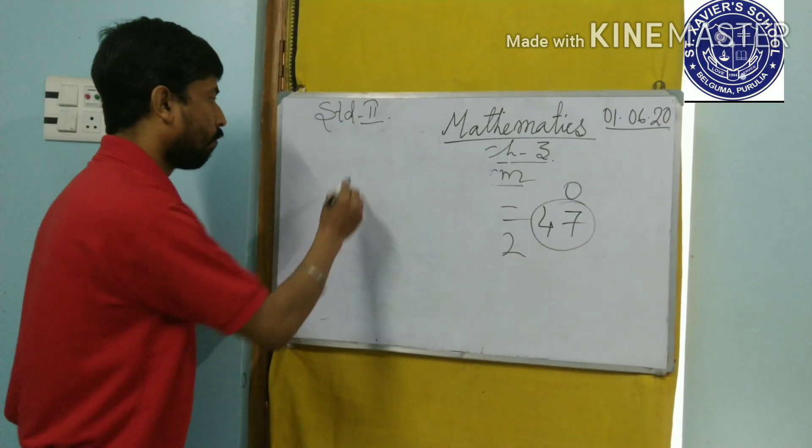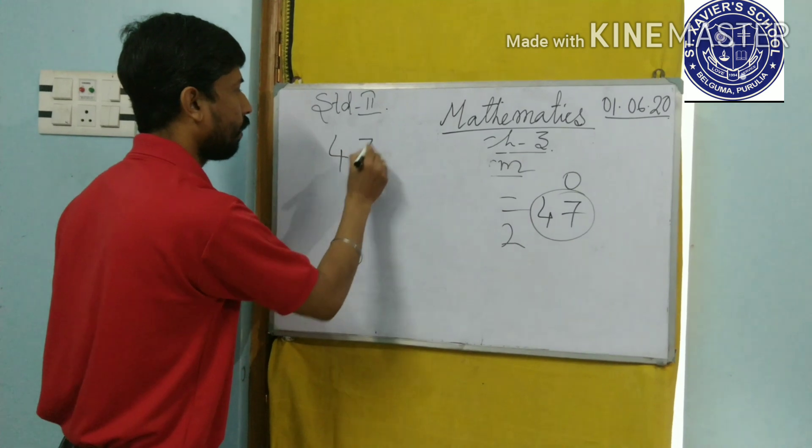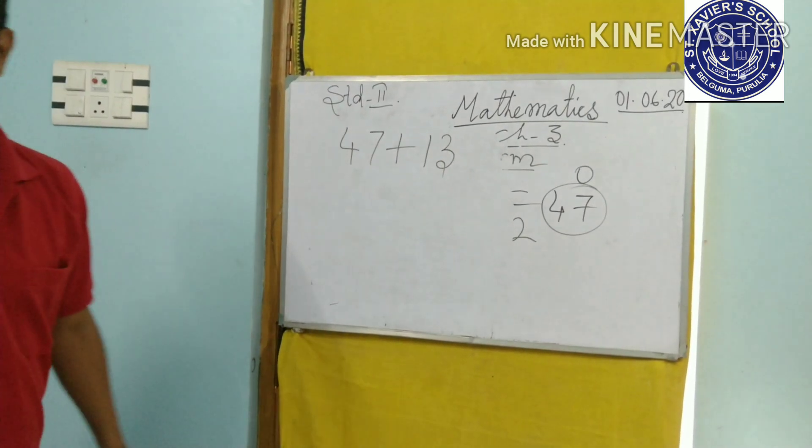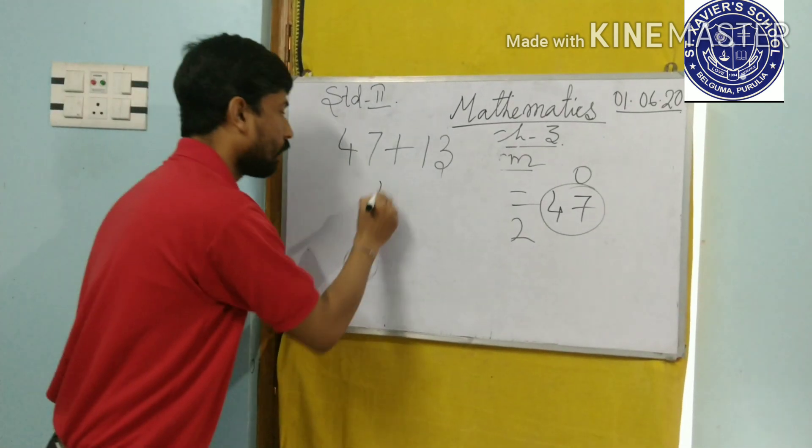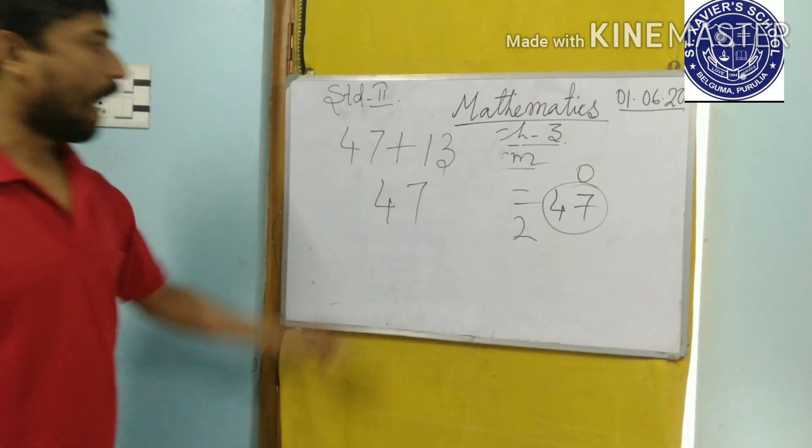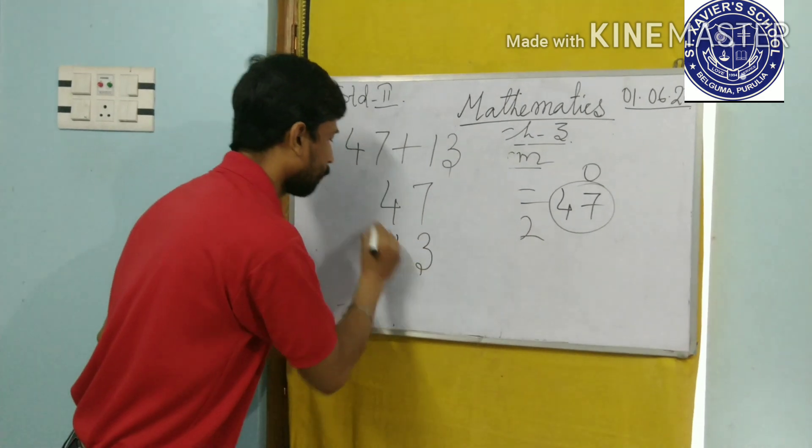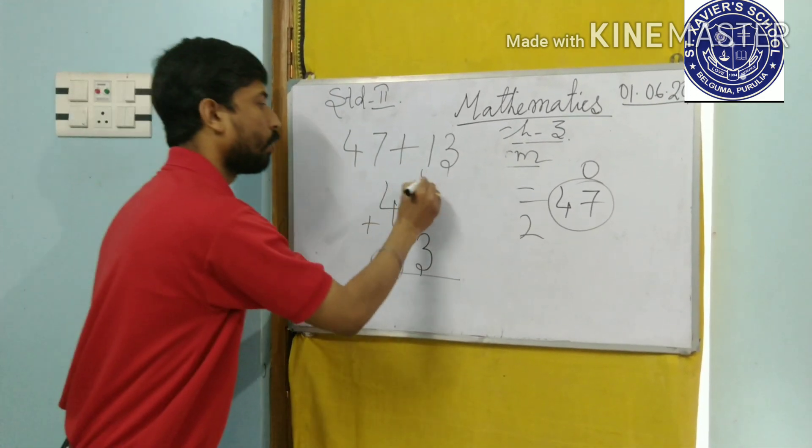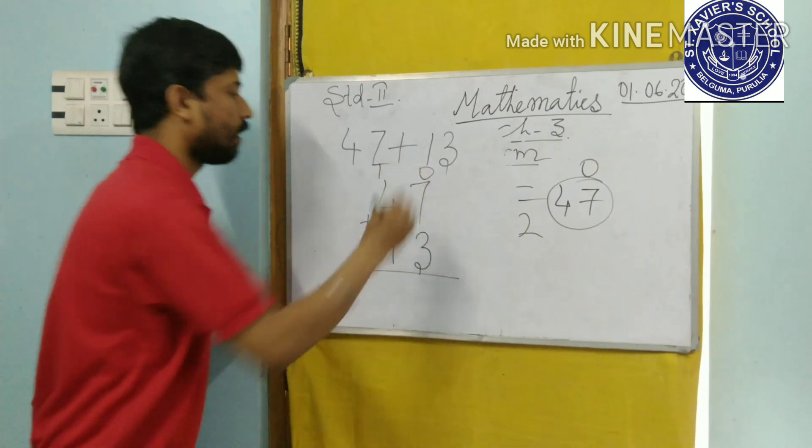Now see, how to arrange. For example, if I take 47 plus 13. This is addition with column. So first, I will put 47. And then, I will put 13. First, you know, what do you have to add? In the 1's place, and then in the 10's place.